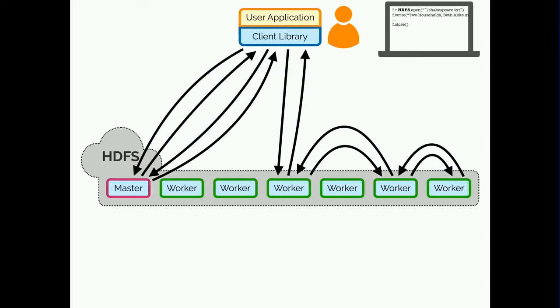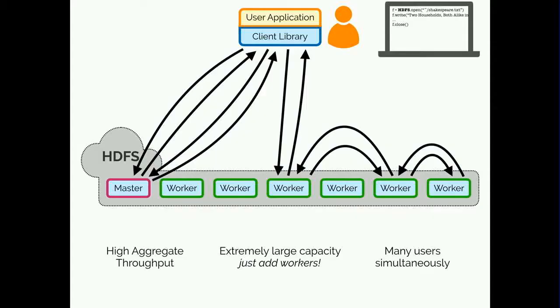Overall, this end-to-end execution is a little bit complicated. It required multiple network hops and contacted multiple processes and machines. This complexity is the price we pay, but in return we get some very powerful properties. HDFS has very high throughput and essentially unlimited capacity, and it can handle workloads from many users simultaneously.